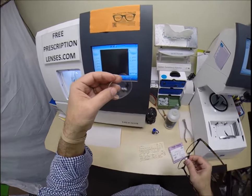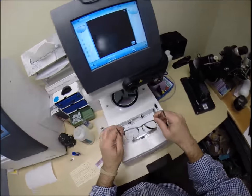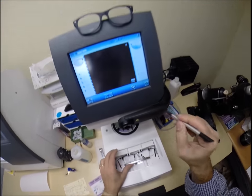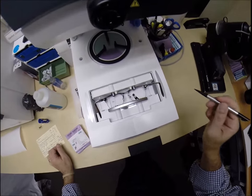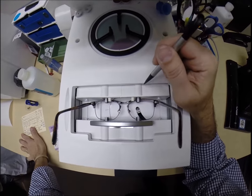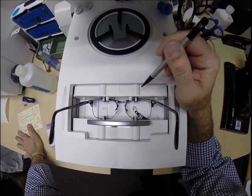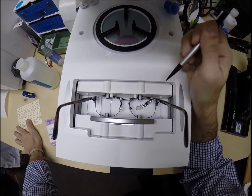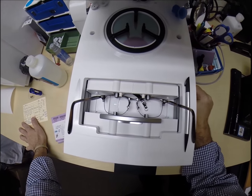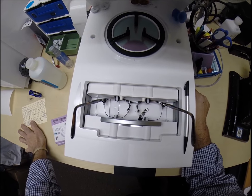I'll pop out the original demo lenses one of which says Persol and I'm going to put your frame into the tracing element of my blocker and hit start. Everybody wants to know how does the computer know what shape lens to cut? This is why. That stylus is going around tracing the inside bevel of the right side of the frame before doing the same thing on the left.